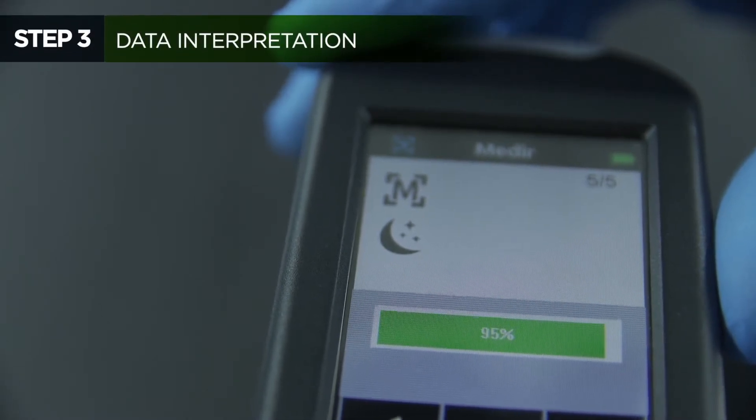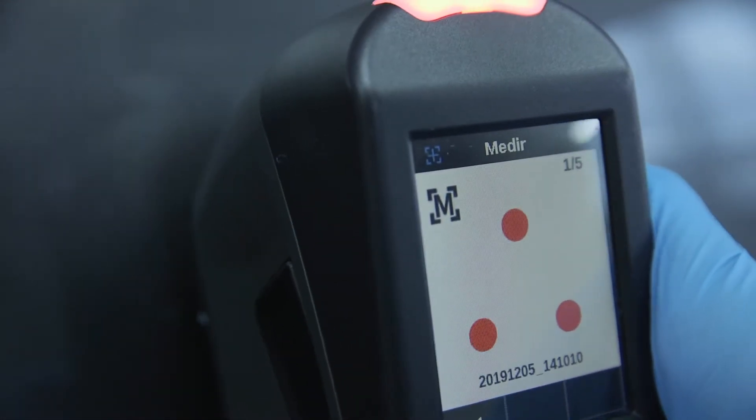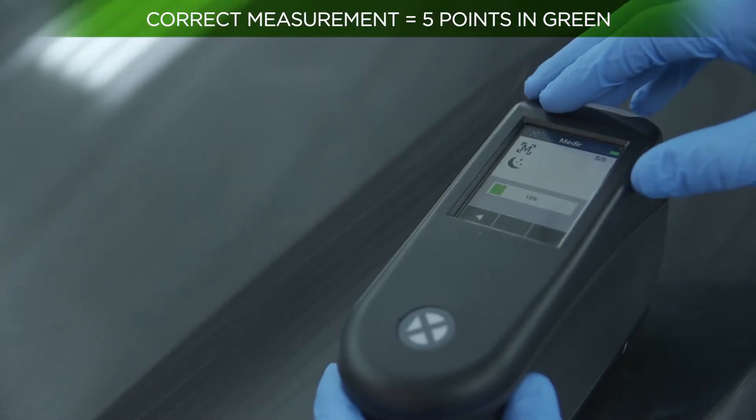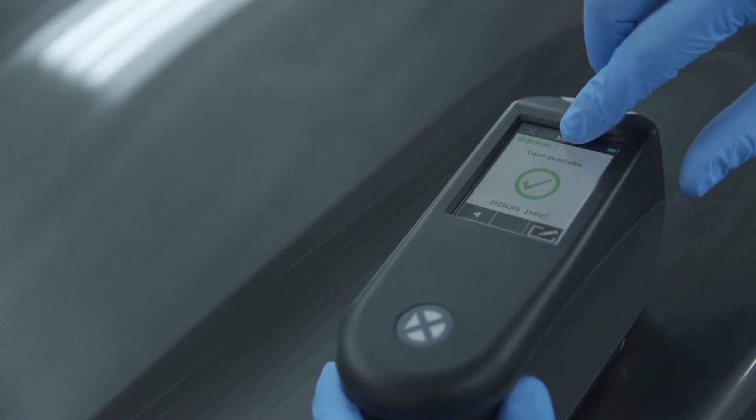After taking the five measurements, the results of the reading will be shown through the valuation indicator. Our recommendation is that if the five dots in green are not completed, there is a large difference between the five readings and so we should carry out the measurement process again.